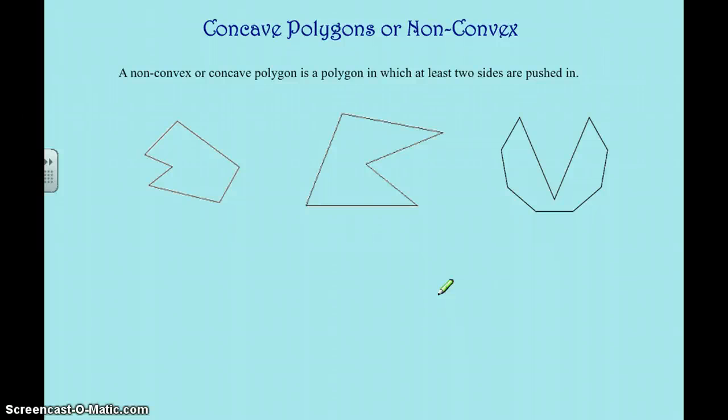And so non-convex or concave polygons is a polygon in which at least two sides are pushed in. So let's take a look at this. See how this side is pushed in? So it's pushed into the interior of the shape. So this would be an example of a concave or non-convex polygon.